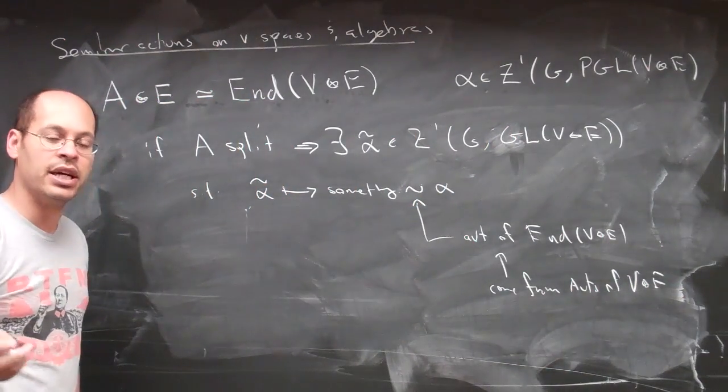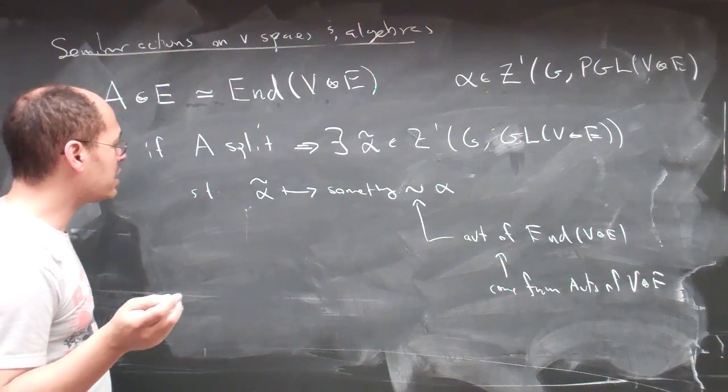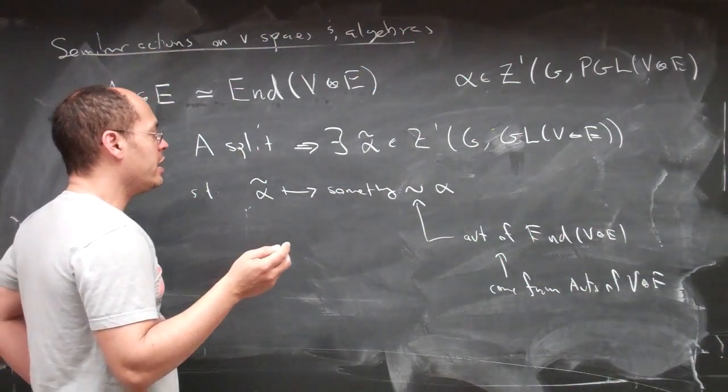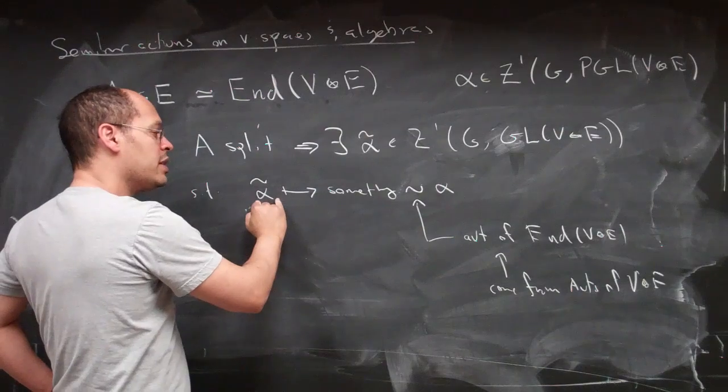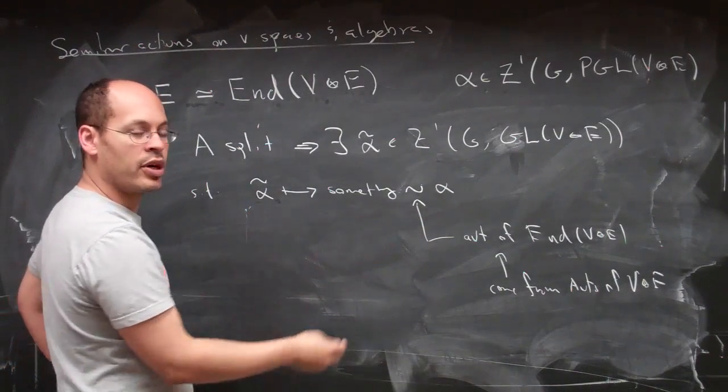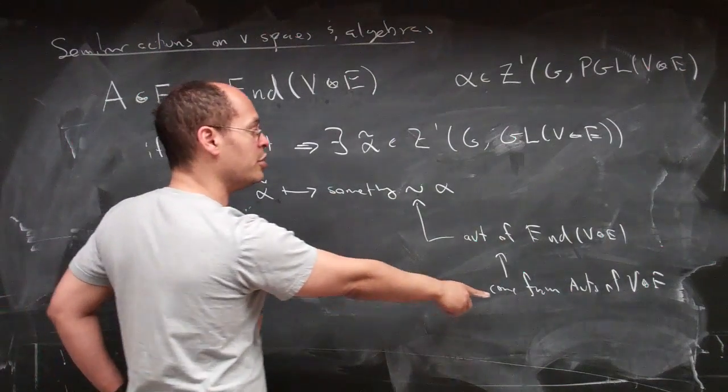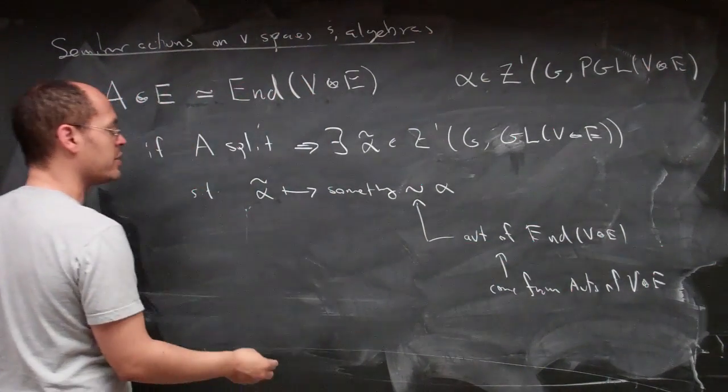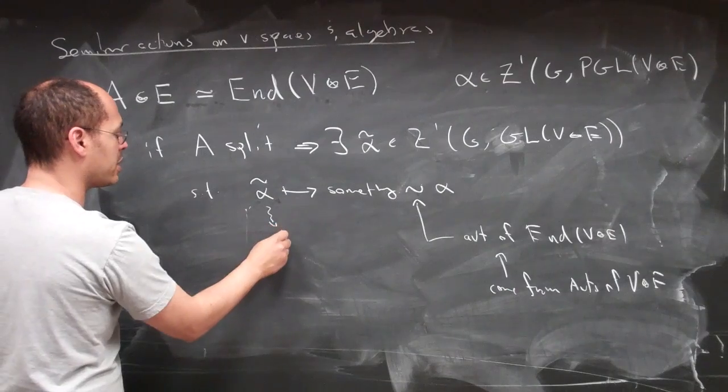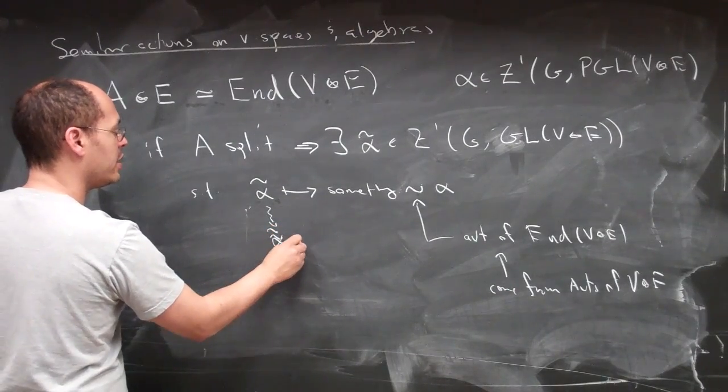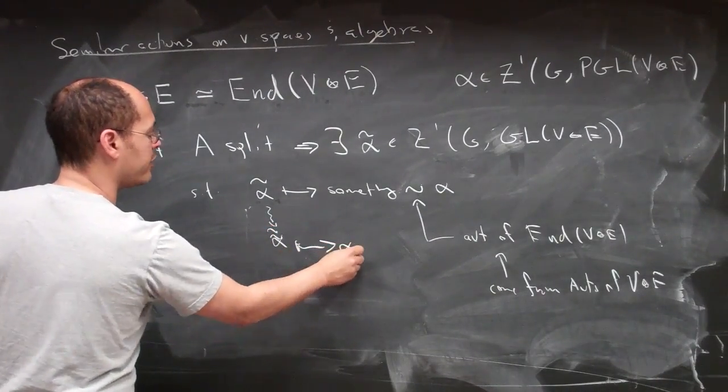And so really what that says is that if I alter alpha tilde by those automorphisms of V tensor E, which induces the automorphisms of the endomorphisms, if I tweak this thing to make it some alpha double tilde, then this is actually going to go to alpha itself.